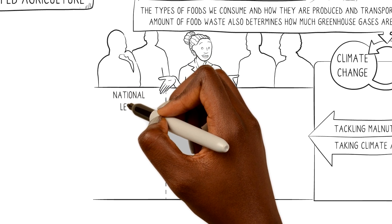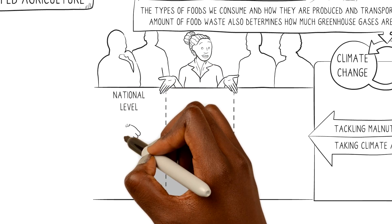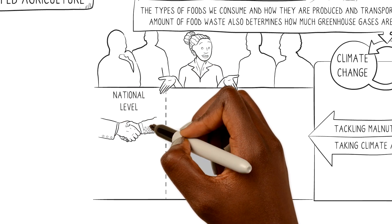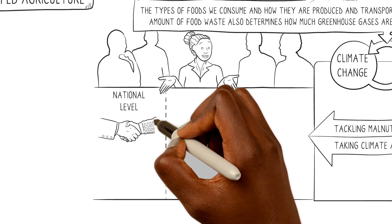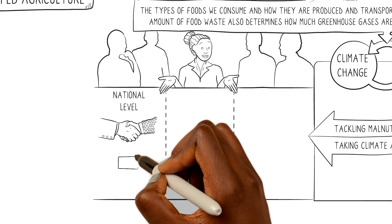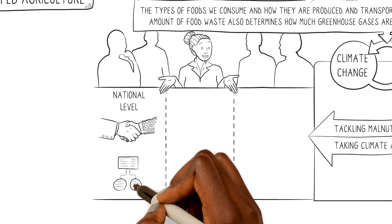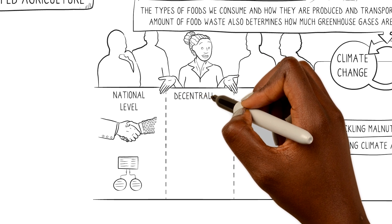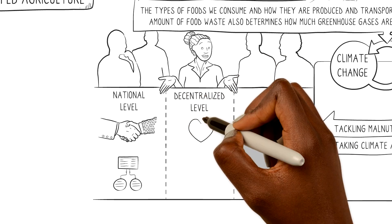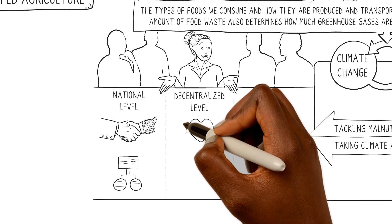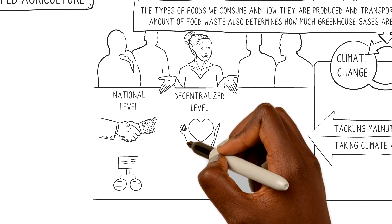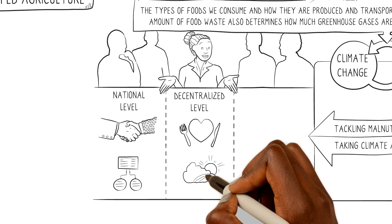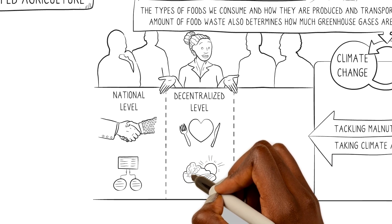At the national level, the government could support inter-ministerial collaboration between multiple actors and provide comprehensive policy frameworks. At the decentralized level, extension officers and health officers can promote healthy and sustainable diets and climate-smart farming techniques.